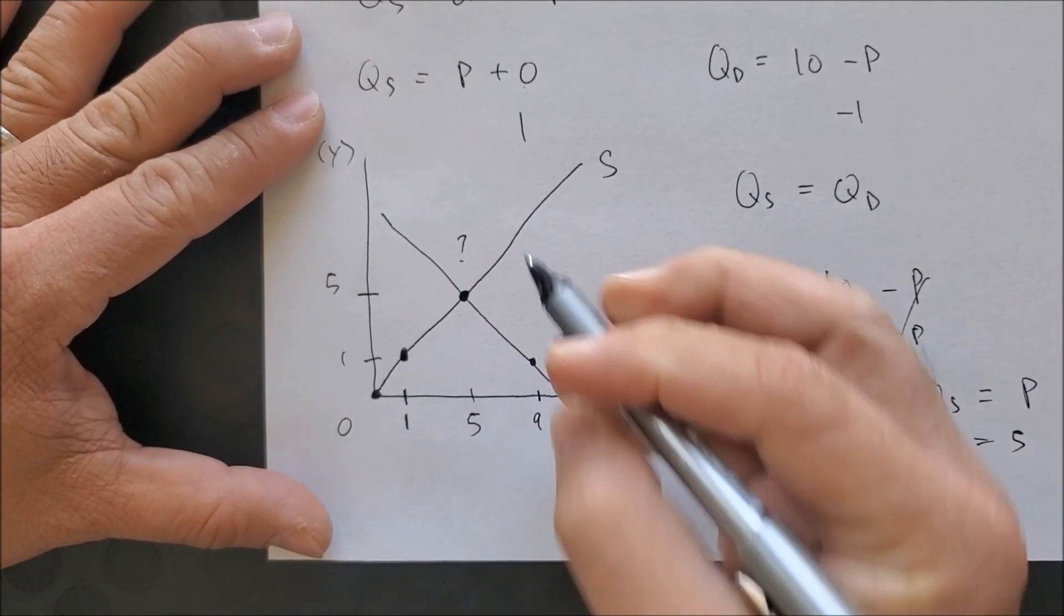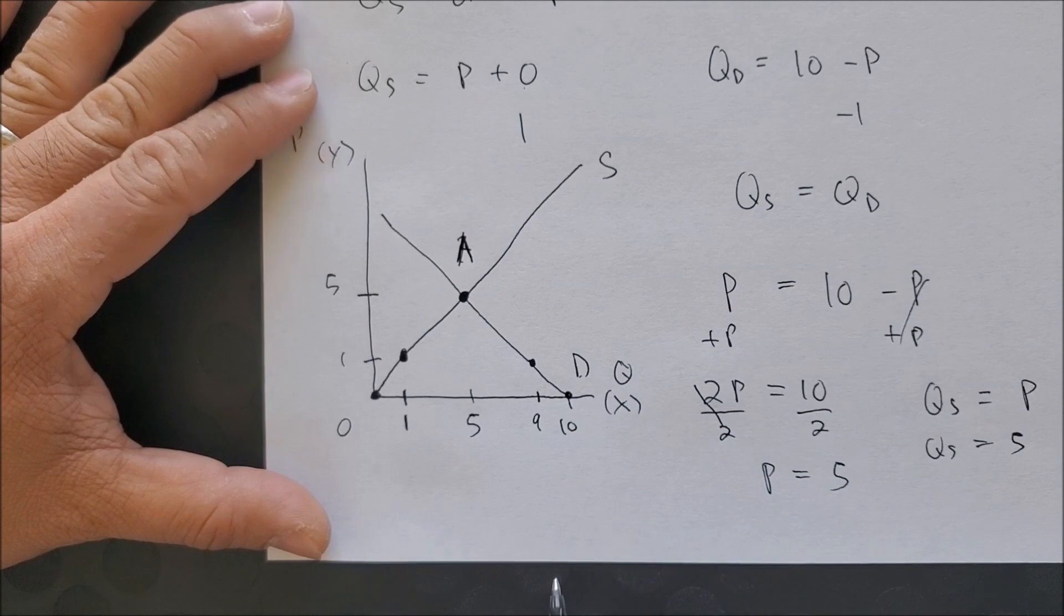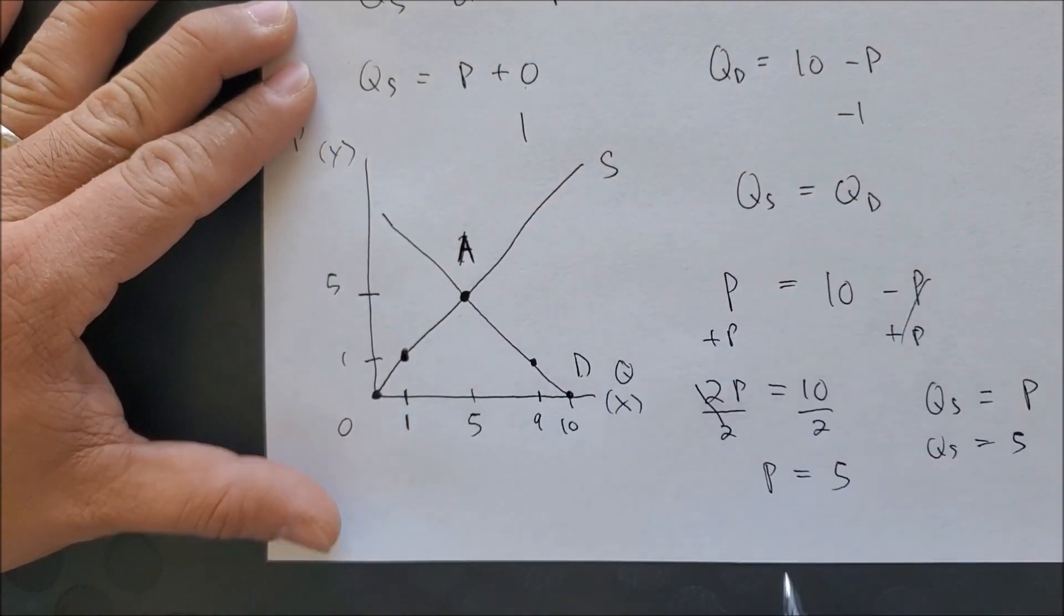And this is how we would find the equilibrium quantity and the equilibrium price by setting both supply and demand equations equal.